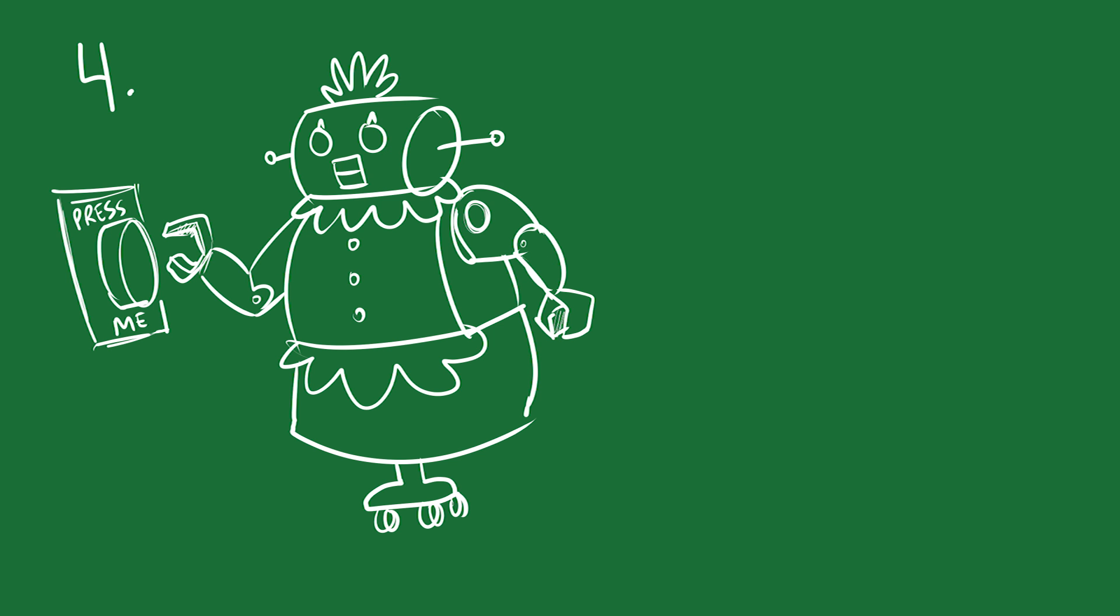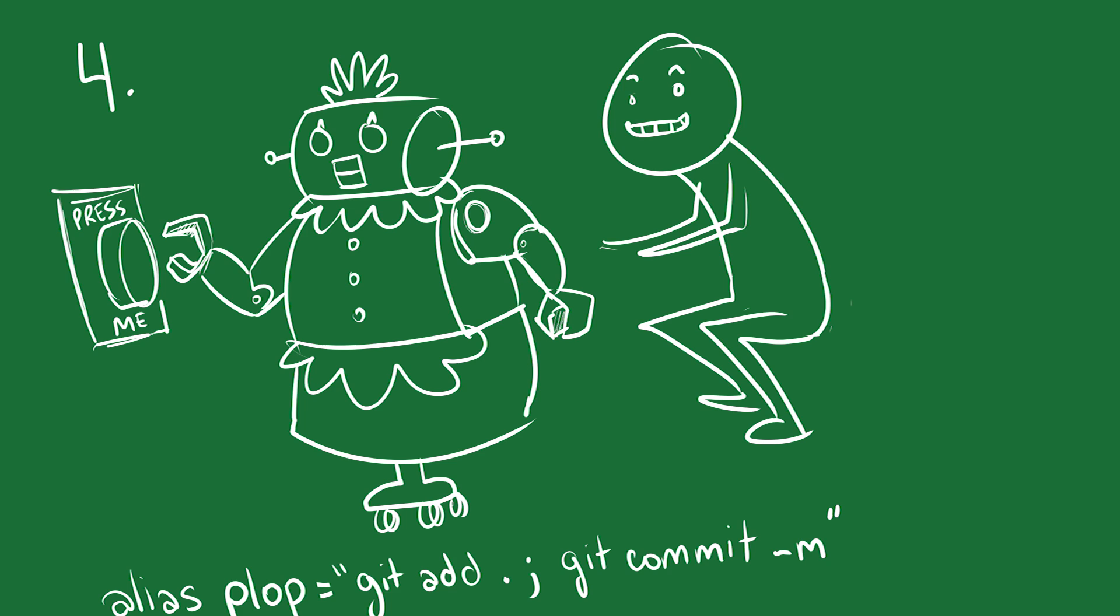4. Automate anything that you might have to do again. If you're not sure how to start, just start making aliases for commands that you use all the time. As you find yourself starting to build more and more complicated aliases, start combining them into libraries. Start linking them together. After a while, you'll have shortcuts so deep that all you have to do is flex a butt muscle, and your software will test itself, push to source control, deploy, and make you a cup of coffee.